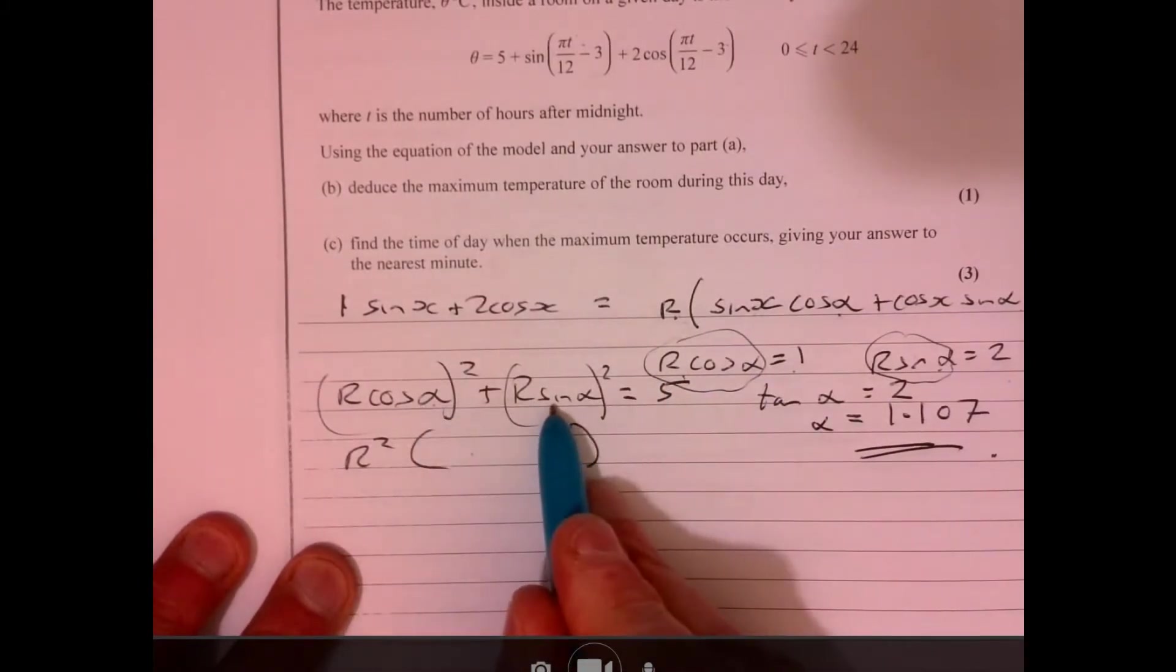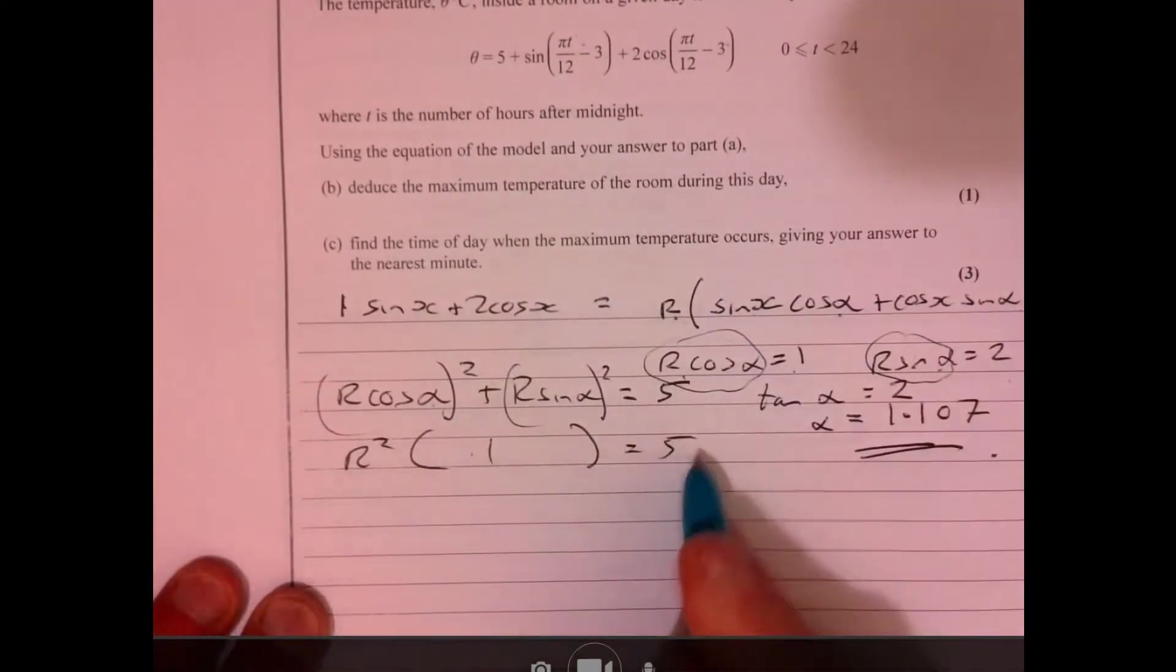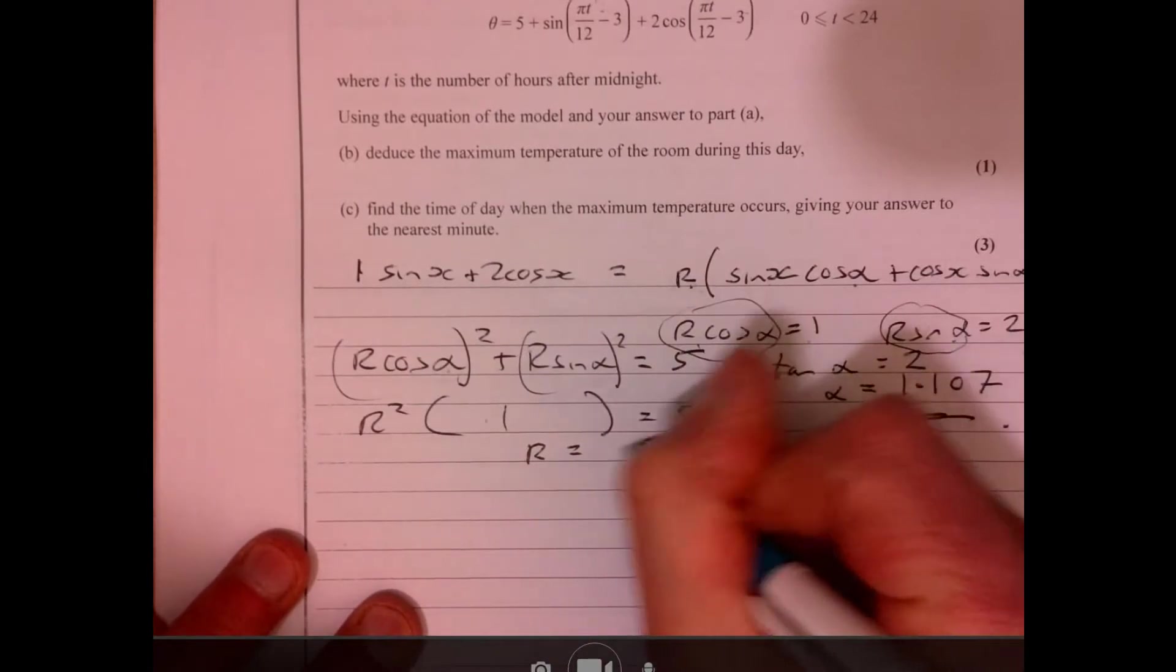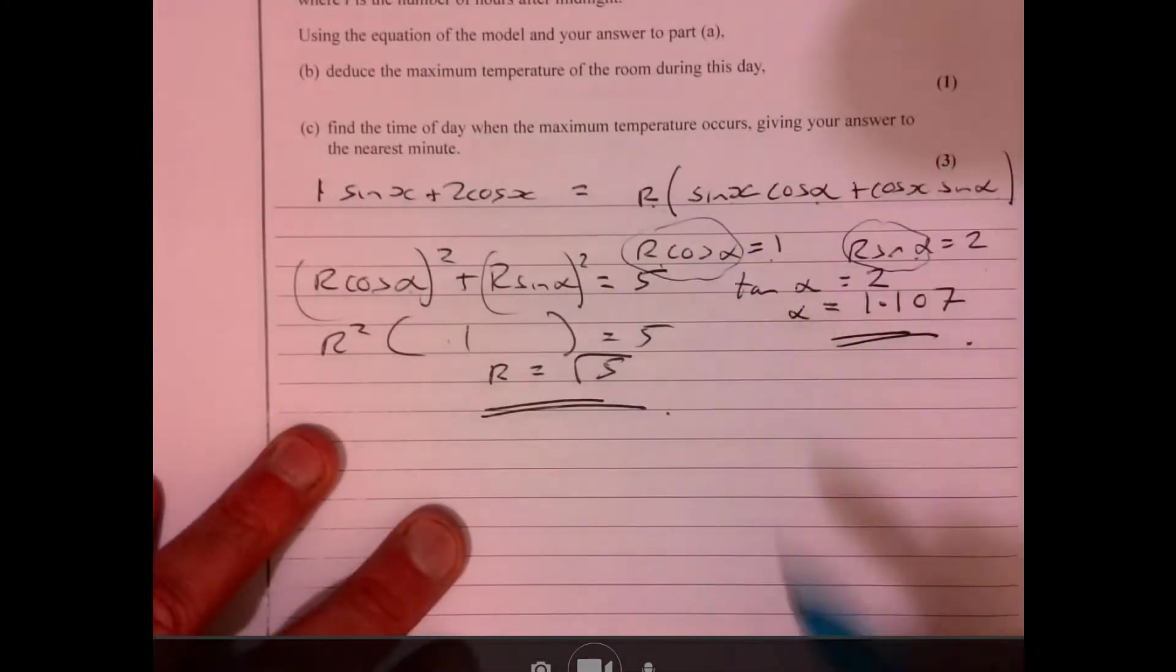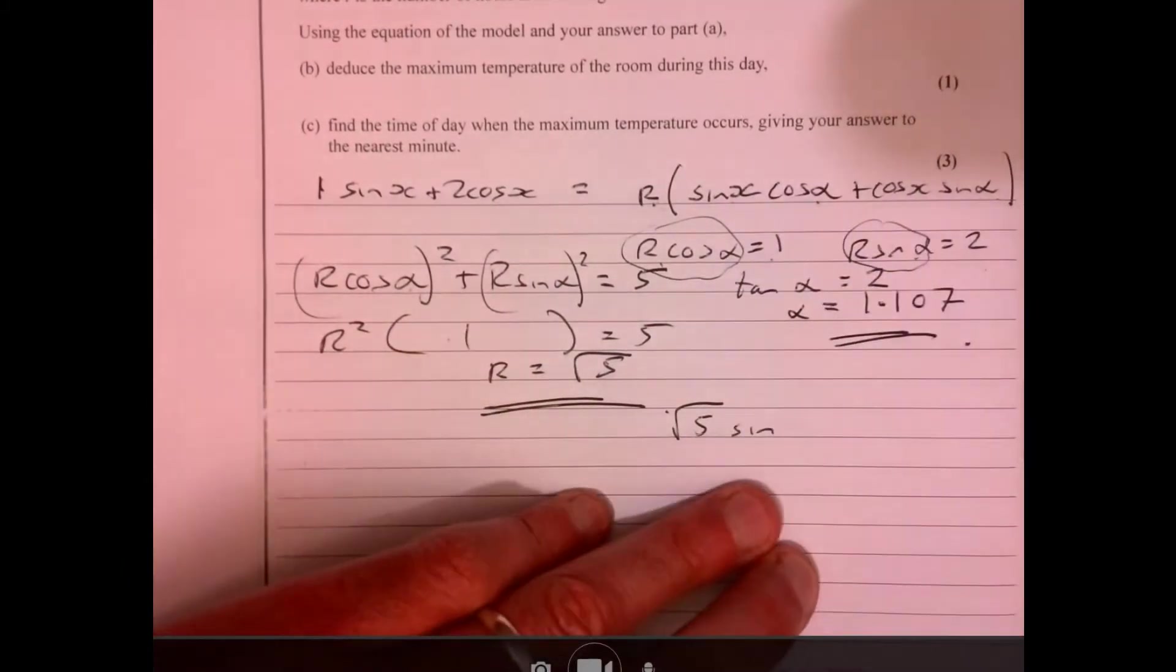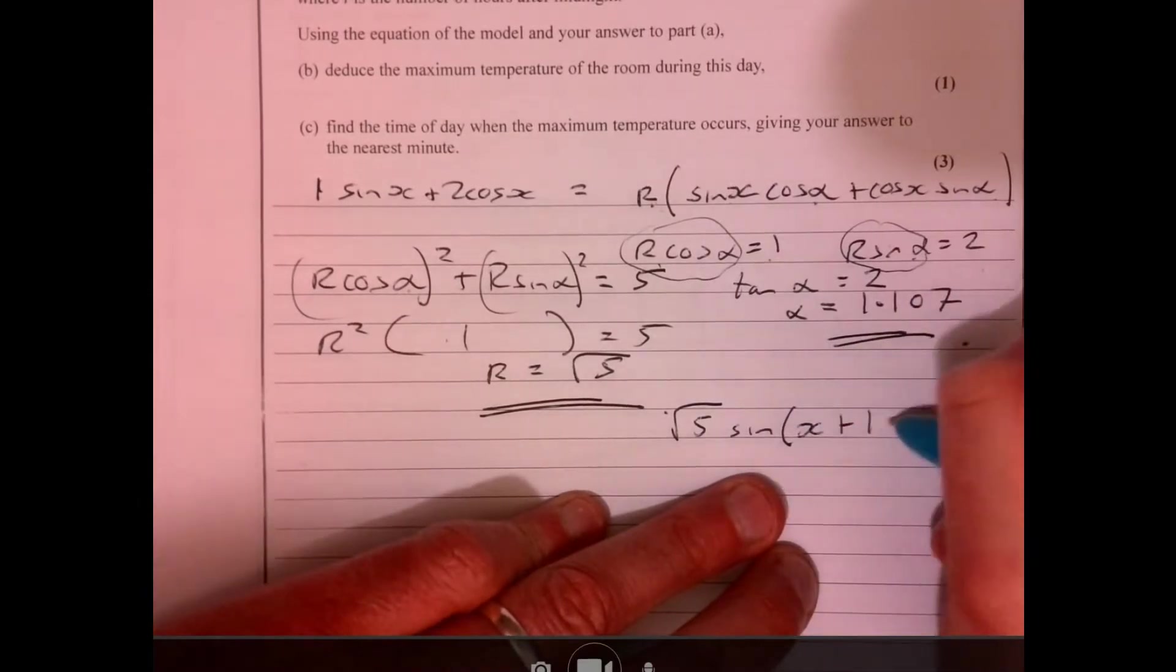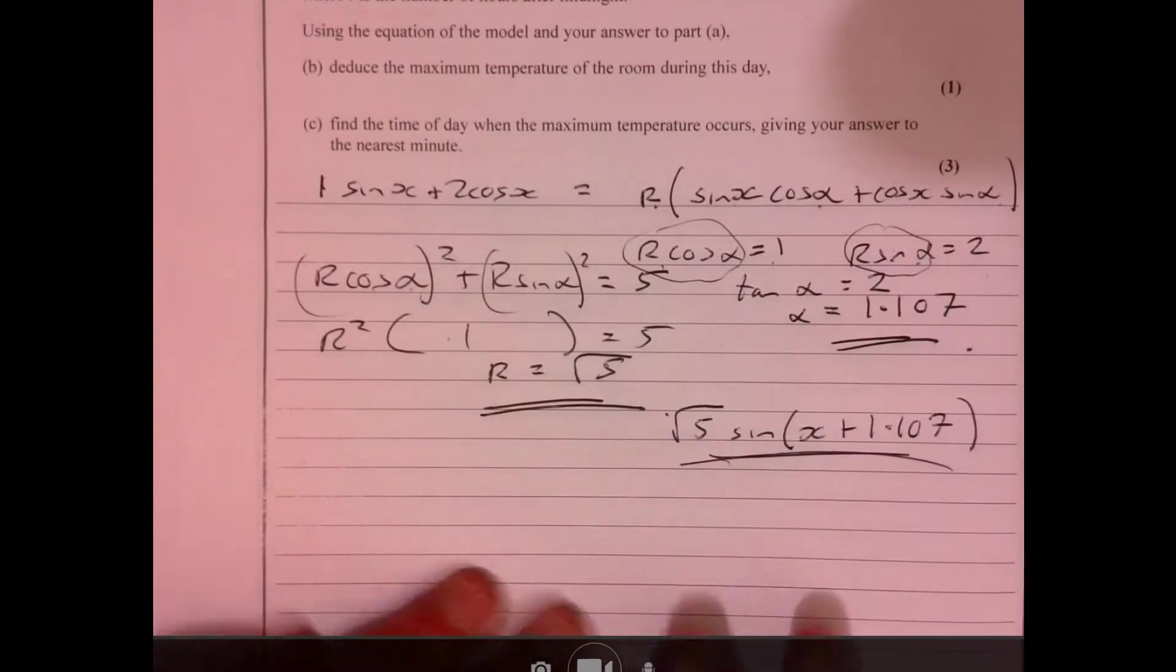That's equal to five, isn't it? If I take the r out, r squared times cos squared alpha plus sine squared alpha, that multiplied by one equals five. R squared equals five, so r must equal root five. So what we've got is root five sine of x plus 1.107.